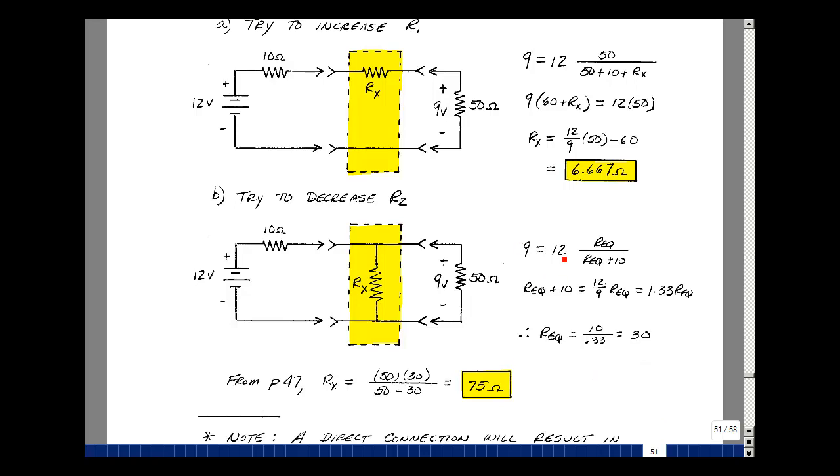Divide by the 9, bring this on the other side of the equation. This turns out to be 1.33 times R equivalent. This again would be some resistance in parallel with the 50 ohms. Bring this on this side of the equation and I've got 0.33 times R equivalent equals 10. Divide by the 0.33, so I need 30 ohms for the parallel combination.